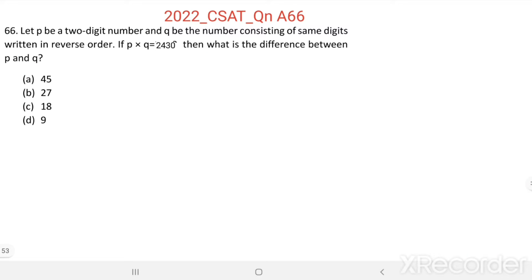Question number 66. Let P be a two-digit number and Q be the number consisting of the same digits written in reverse order. If P into Q equals 2430, then what is the difference between P and Q?